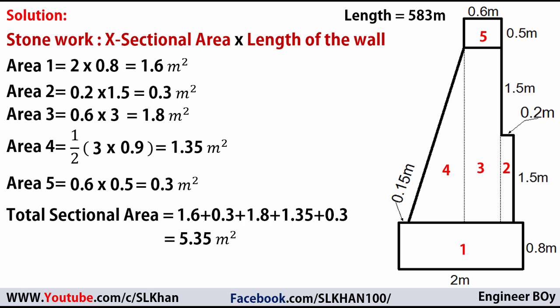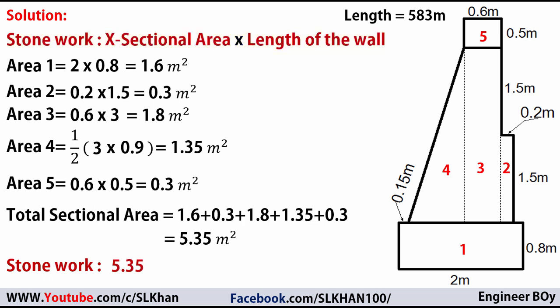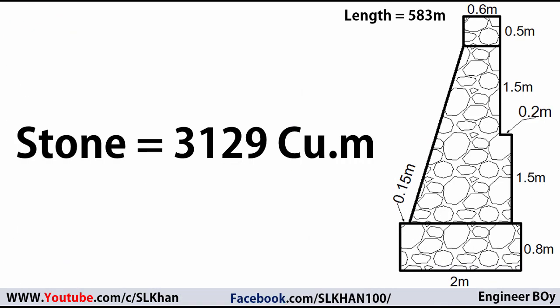The stonework, or volume of this retaining wall, equals the cross-sectional area times its length: 5.35 square meters times 583 meters equals 3,119.05 cubic meters. So the total stonework for the given retaining wall is approximately 3,119 cubic meters.